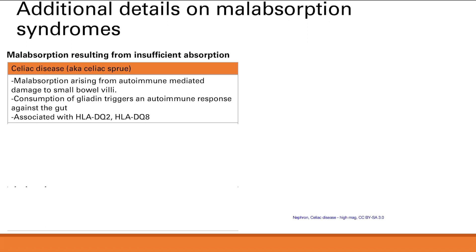The first condition is celiac disease, also called celiac sprue. This is malabsorption arising from autoimmune-mediated damage to the small bowel, resulting in impaired absorption. In patients with this disease, consuming gliadin — a protein found in wheat and grains within the gluten protein — triggers an autoimmune response against the gut.